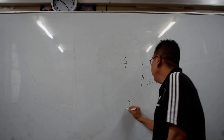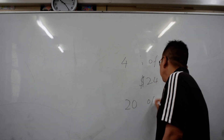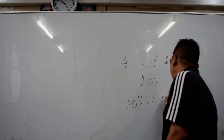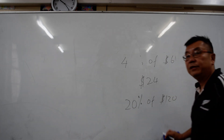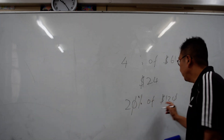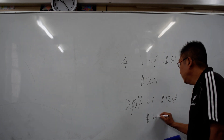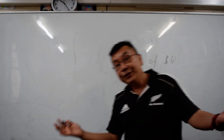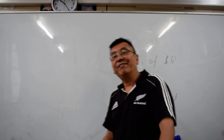Another one: 20% of $120. You take away the zeros: 2 times 12, which gives you $24. Thank you and have a good day.